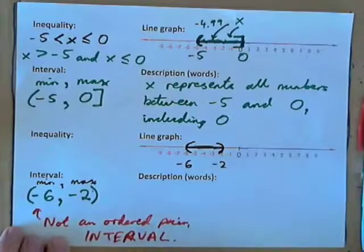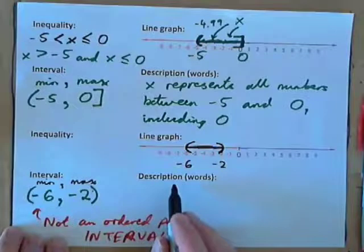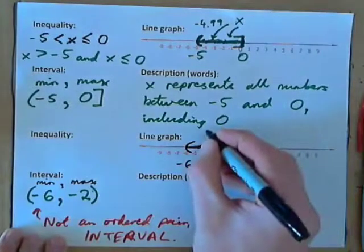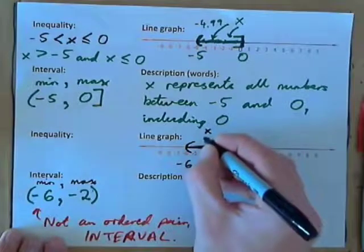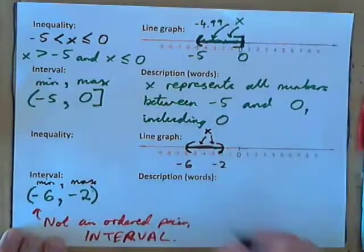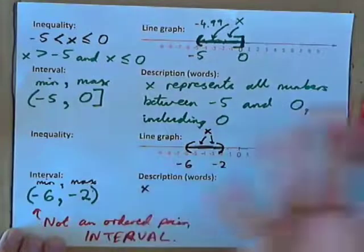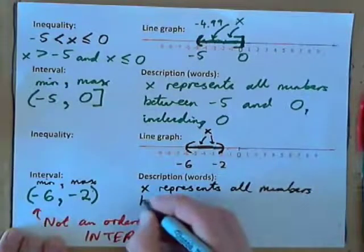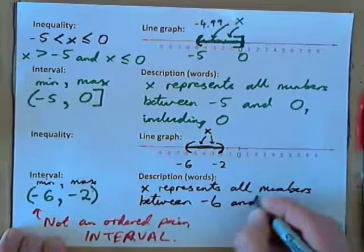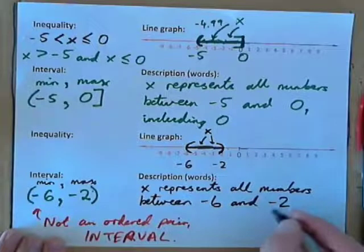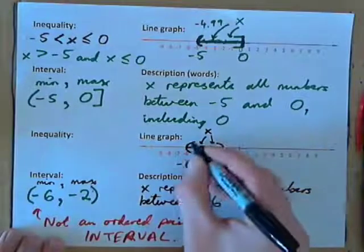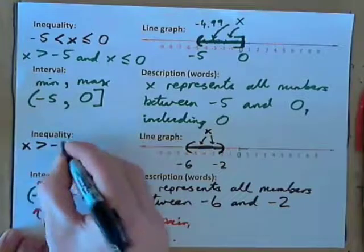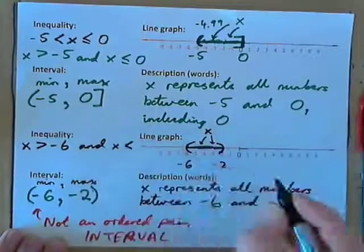Then I'd probably write down the description: all numbers between negative 6 and negative 2. We could come up with a variable x to represent all numbers in between negative 6 and negative 2 — not including negative 6 and not including negative 2. As an inequality: x is greater than negative 6, and x is less than negative 2.